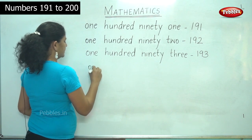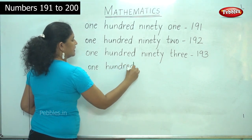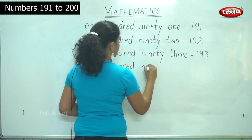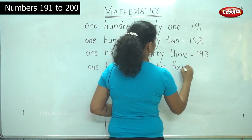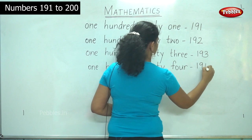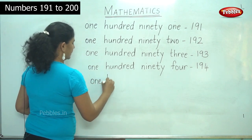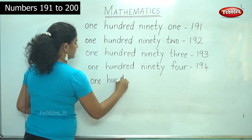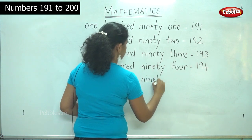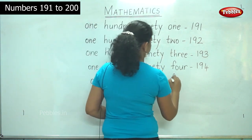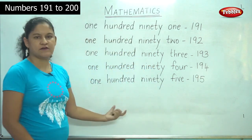194: O-N-E H-U-N-D-R-E-D N-I-N-E-T-Y F-O-U-R. 1-9-4, 194. Next, 195: O-N-E H-U-N-D-R-E-D N-I-N-E-T-Y F-I-V-E. 1-9-5 is read as 195.